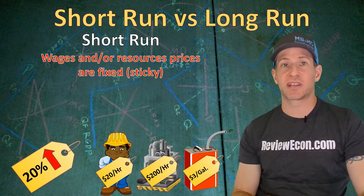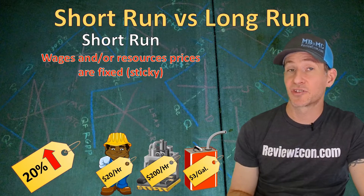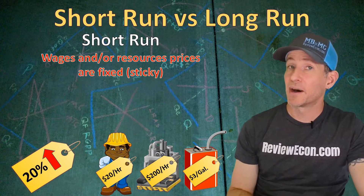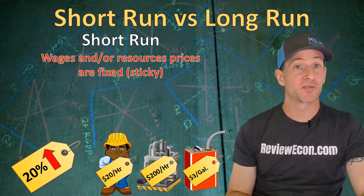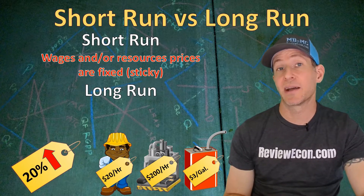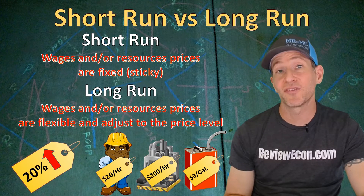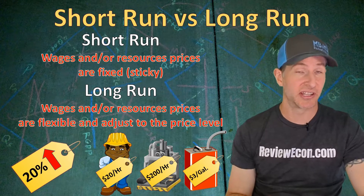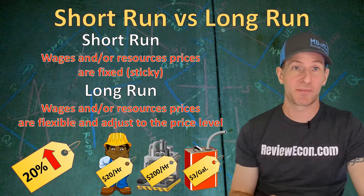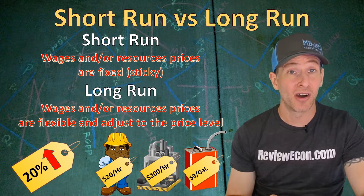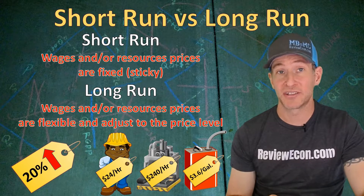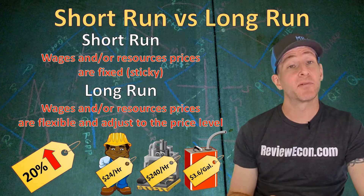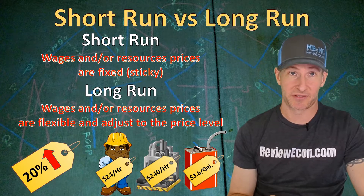Sticky means that wages and other resource prices don't change because of a change in the price level. So if we have a 20% inflation rate, in the short-run wages and other resource prices will be unchanged. But in macroeconomics, when we talk about the long-run, it means that wages and other prices are flexible and they will actually adjust to changes in the price level. So if we still have that 20% inflation rate, in the long-run wages and other resource prices will increase by 20% because they will adjust to the new price level.